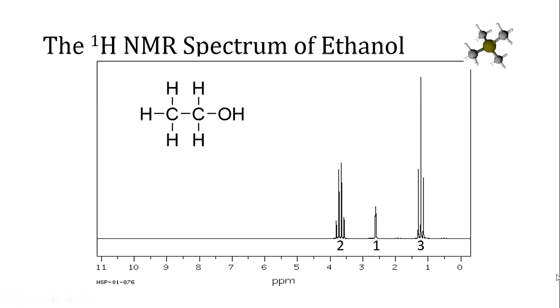Across the bottom of the spectrum is our horizontal scale and it's in parts per million. That's what PPM stands for. The horizontal scale is called the chemical shift scale. It's the chemical shift that is describing the difference in energy between the spin states of those hydrogen atoms in the molecule of ethanol.